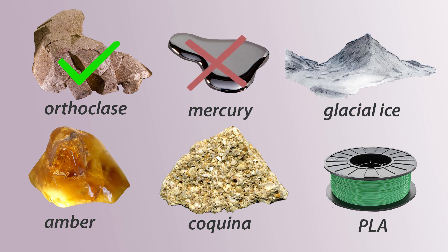Glacial ice is tricky. It's solid at least in the environment it's formed in, and it's formed naturally but not from living things. It's made of H₂O, so it has a definite chemical composition and an ordered atomic arrangement — so there's nothing stopping it from being a mineral. Refrigerator ice, on the other hand, wouldn't be a mineral since it's man-made.